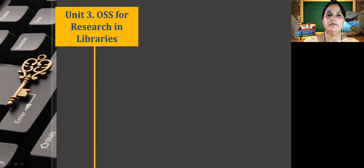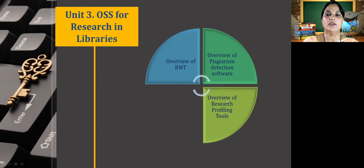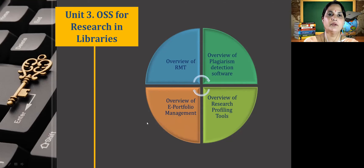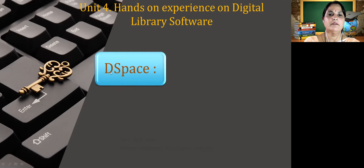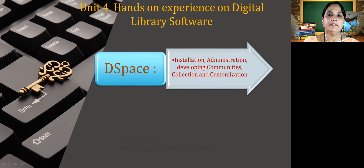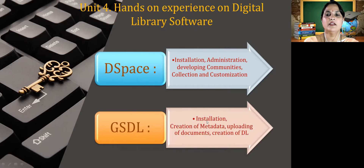Unit 3 is on open source software for research in libraries. It consists of an overview of reference management tools, plagiarism detection software, research profiling tools, and e-portfolio management. Unit 4 covers hands-on experience on digital library software, including DSpace — its installation, administration, developing communities, collection development, and customization — and GSDL (Greenstone Digital Library), covering installation, metadata creation, uploading documents, and creation of a digital library.